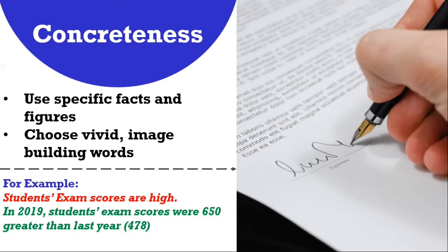So in 2019, students' exam scores were 650, greater than last year. Then in the next year they tell you the marks. That's called your concreteness. You will not ask your production department or your supply department, 'We want some syringes.' Some? How many? That will be very awkward. You have to use a concrete manner: 'We want 500 syringes in emergency department.'